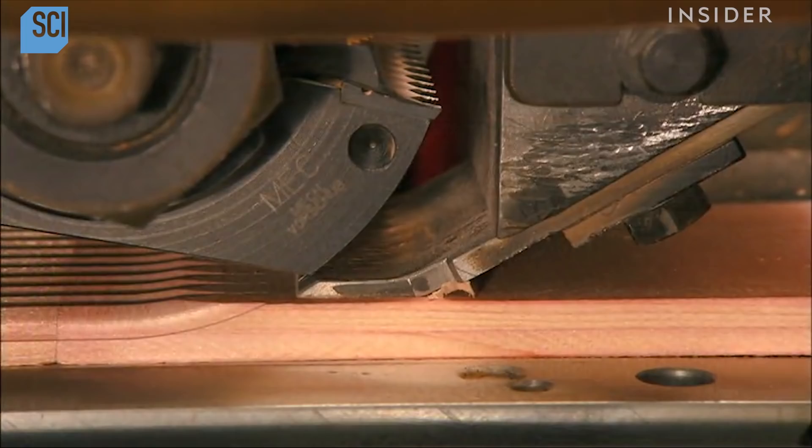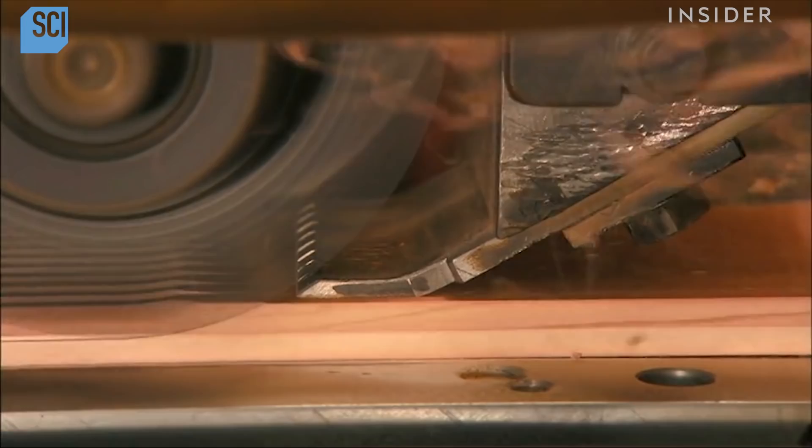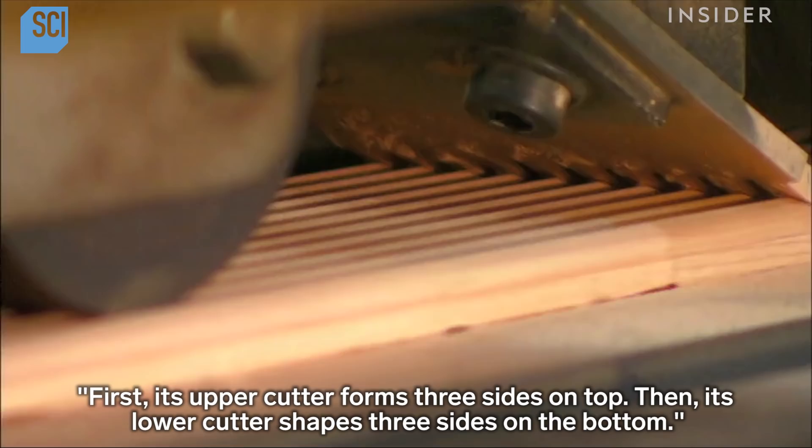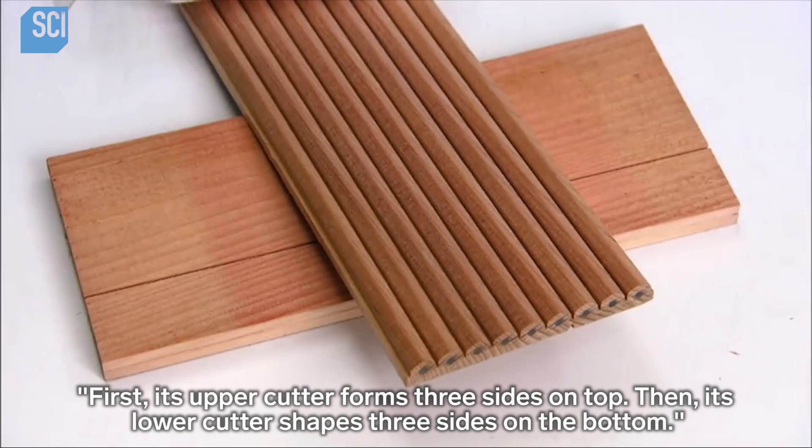After that, it's just a matter of slicing the sandwiches into pencils. This shaping machine makes the hexagonal profile in two steps. First, its upper cutter forms three sides on top, then its lower cutter shapes three sides on the bottom. As soon as the bottom side is cut, the pencils separate.